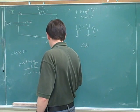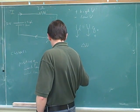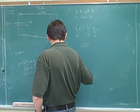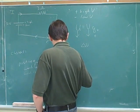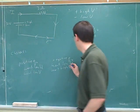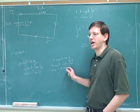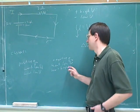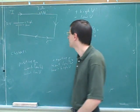Everything wants a low energy. But the way to get a low energy, if you're negative, is to move towards the higher potential, because for a negative charge, potential represents lowness, or depth.